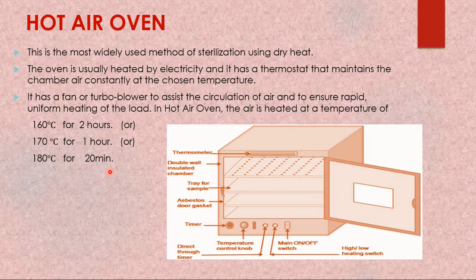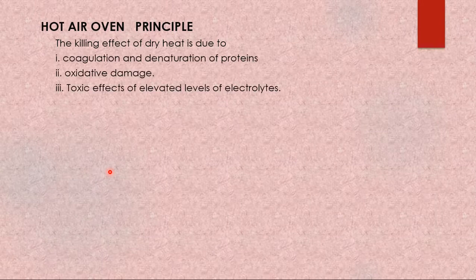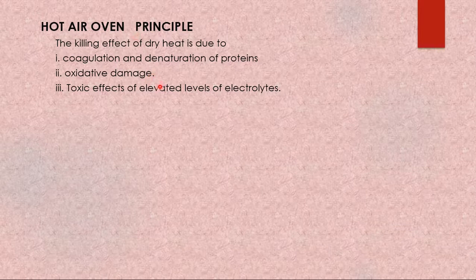The principle behind the hot air oven is the same as dry heat: coagulation and denaturation of proteins, oxidative damage, and toxic effects of elevated levels of electrolytes. These are the things that happen to microorganisms when hot air oven sterilization is applied.